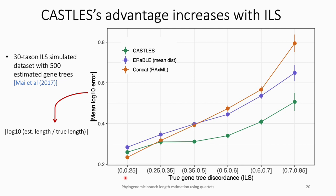Here we see a comparison between methods at different ILS levels on a 30-taxon dataset with 500 genes. The glass-like method was removed due to very high error. As ILS increases, error increases for all methods, but CASEL is less impacted than the others. In the lowest ILS condition, concatenation is the most accurate, with CASEL second and ARABLE third. But in all other conditions, CASEL is more accurate and its error increases more slowly. Concatenation, in contrast, is most impacted — starting as the best method and ending up the worst in high ILS conditions.